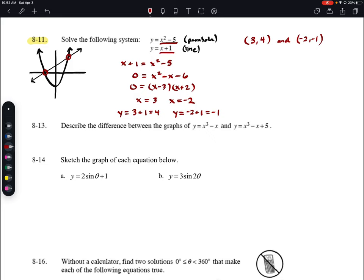You can always plug them back into the equations to double check. For y equals x squared minus 5, we have 4 equals 3 squared minus 5, and 9 minus 5 equals 4. Then negative 1 equals negative 2 squared minus 5, which is 4 minus 5 equals negative 1.